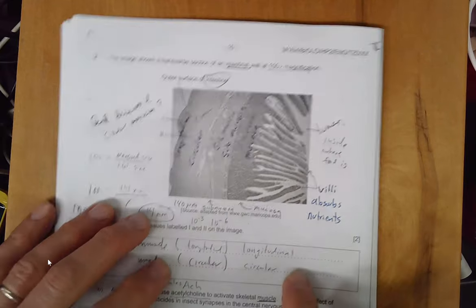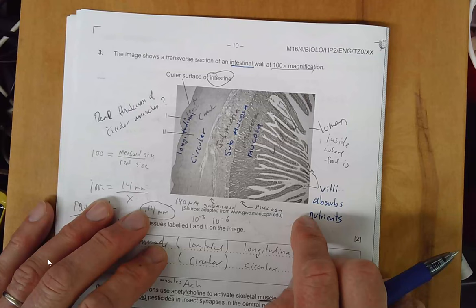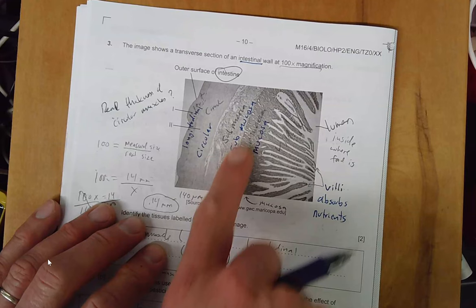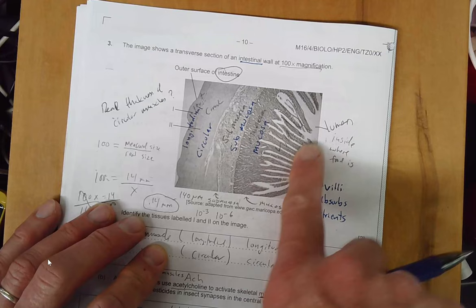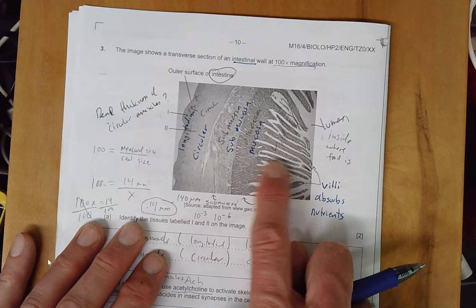We left off in class looking at this cross-section of intestinal wall. You got the longitudinal circular muscle and two layers of mucosa. Remember mucosa sounds like mucus? That's the layer where you're going to have the absorption of all the nutrients coming into your bloodstream.